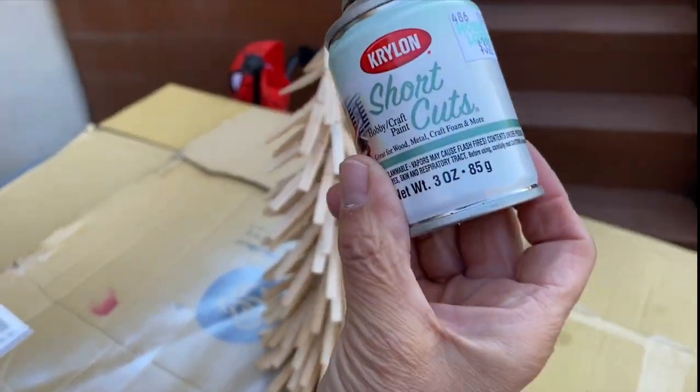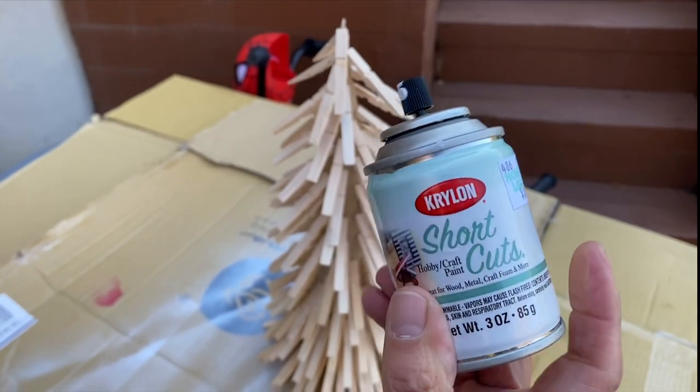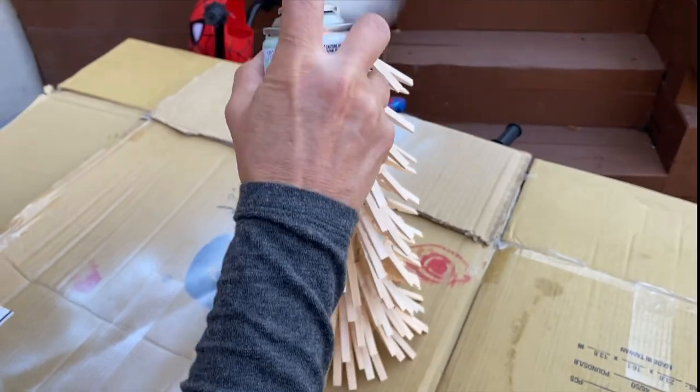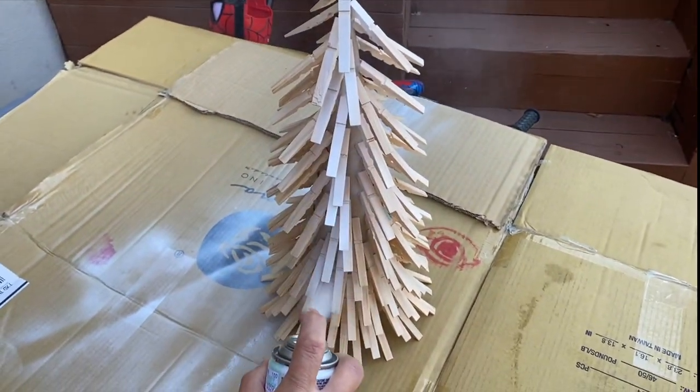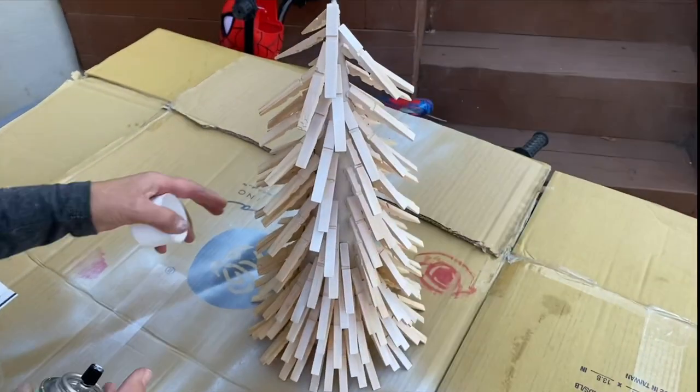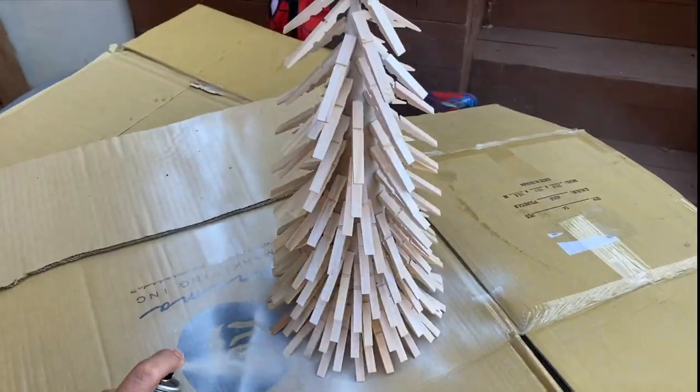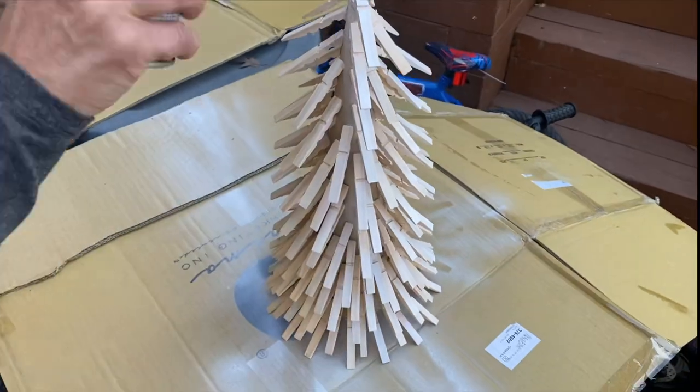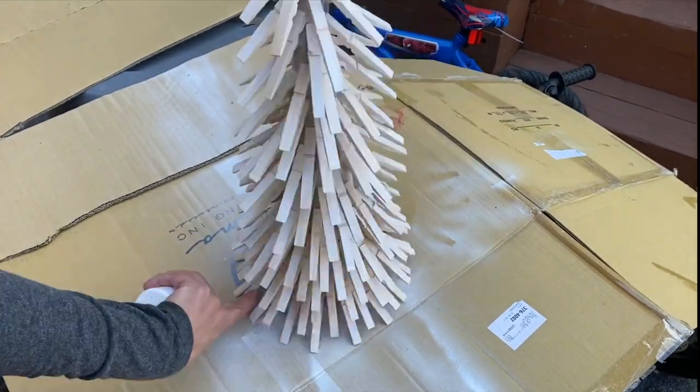And then I took some of my Krylon Shortcuts Spray Paint in white. I like the more natural look. I'm just going to spray down the tree cone. I don't need full coverage. I like some of the bare wood to show through.